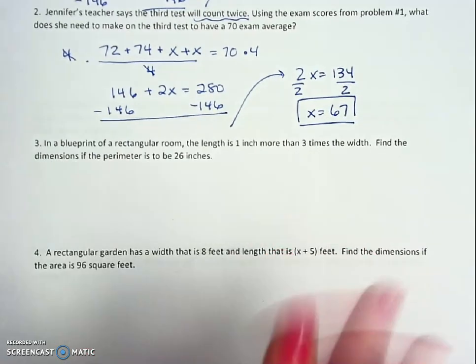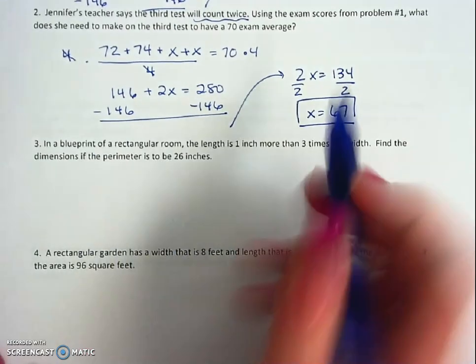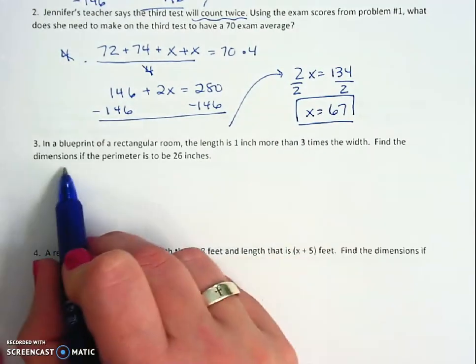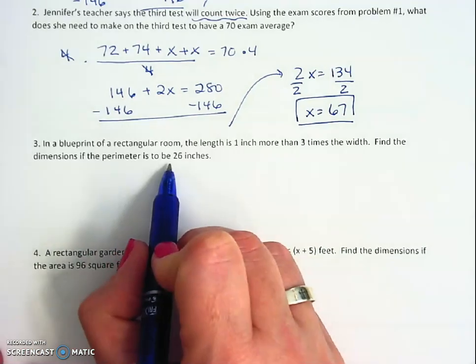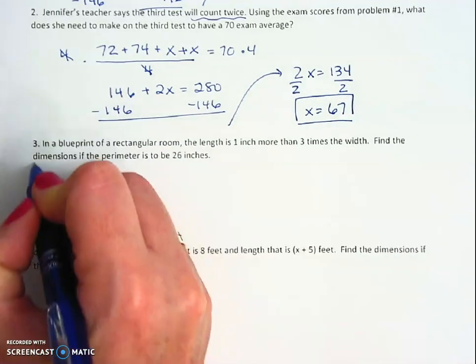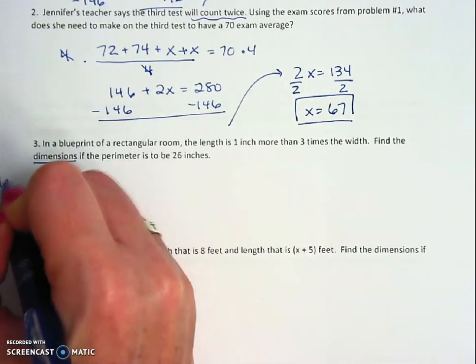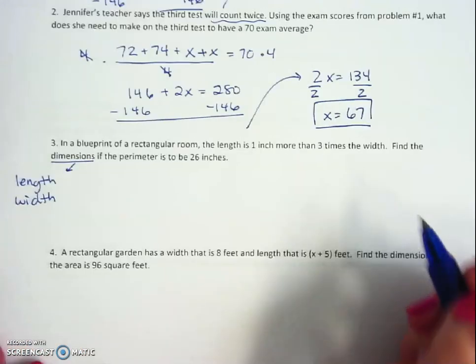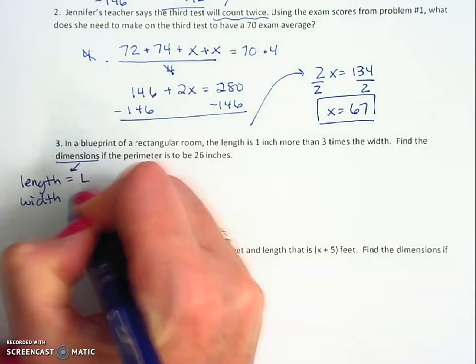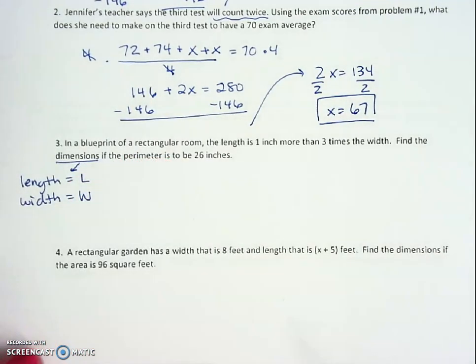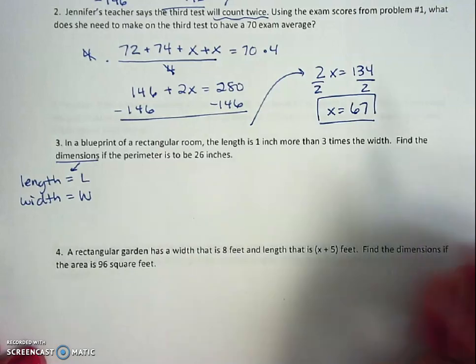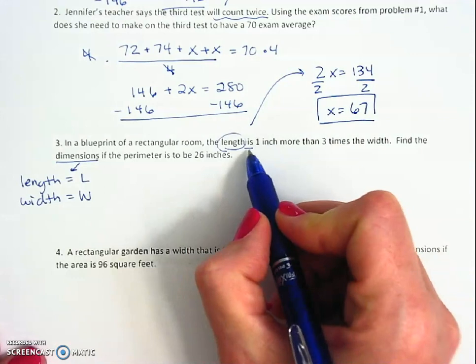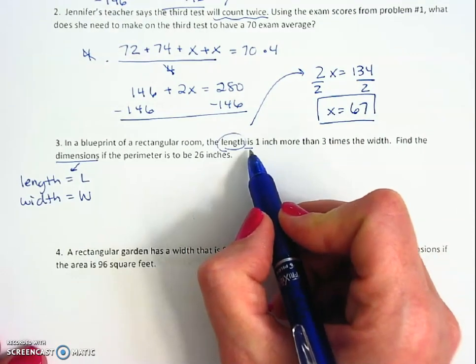For number three we have a rectangular room. The length is one inch more than three times the width. Find the dimensions if the perimeter is 26. So it's asking me to find the dimensions, that means I'm looking for length and width, so I'm going to assign some variables to these. Here's something that the problem is telling me: the length is—anytime you see 'is' it's a good clue that you're going to need an equal sign.